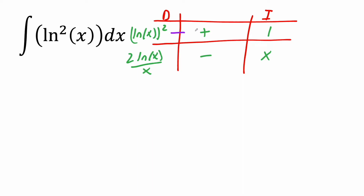I take this piece, multiply by positive, times x. That's normal. So this piece times positive x gives me x times ln²(x).